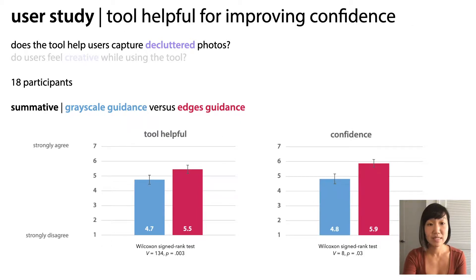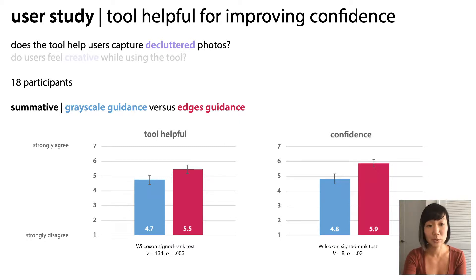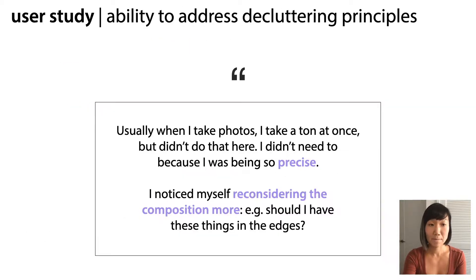However, participants did believe the tool was helpful for the task of capturing clear and decluttered images. It also made them more confident in their ability to address the decluttering principles of subject-background separation and image border flicker. Participants described feeling like they could take fewer photos because they could be more confident in each photo they took: "Usually when I take photos, I take a ton at once. But I didn't do that here. I didn't need to because I was being so precise."